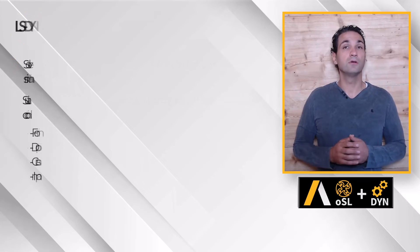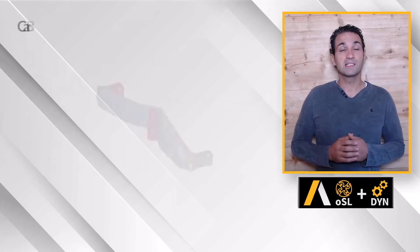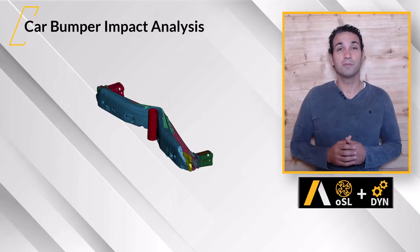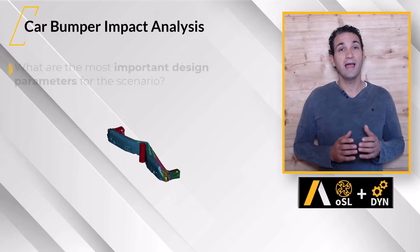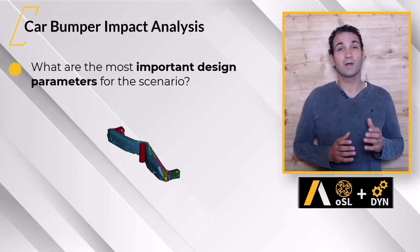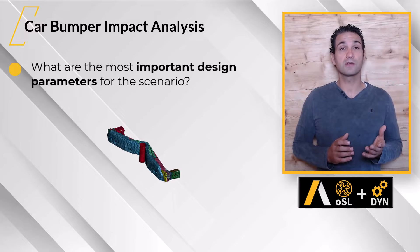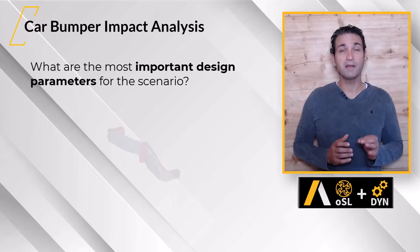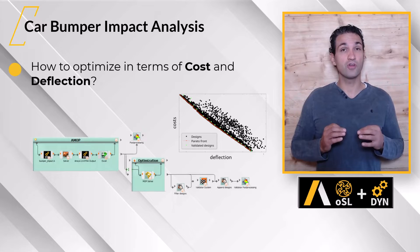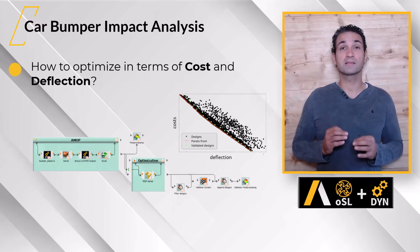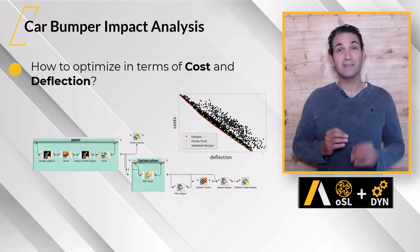As an example, we will explore a car bumper impact. By the end of this course, you will have learned what are the most important design parameters for that scenario and how to optimize in terms of cost and deflection.